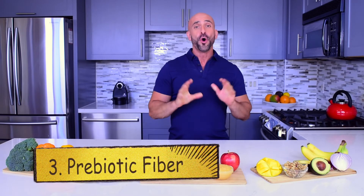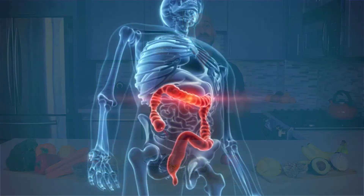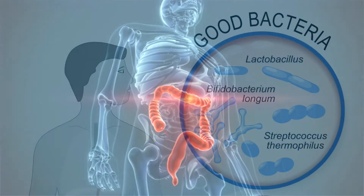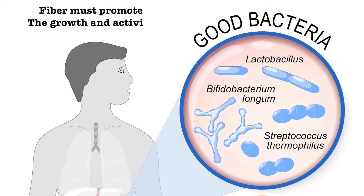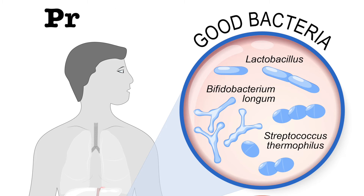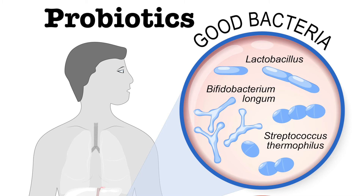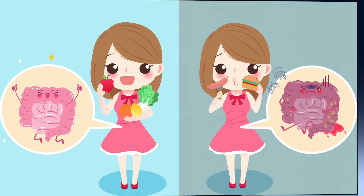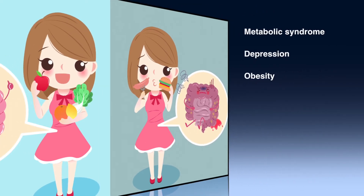The third type of fiber is prebiotic fiber. Although all prebiotics are fibers, not all fibers are prebiotic. In order to be a prebiotic fiber, it must be fermentable by your gut bacteria and promote the growth and activity of the good bacteria in your gut, also known as probiotics. This type of fiber feeds the probiotics to keep your gut healthy and prevent many chronic diseases such as metabolic syndrome, depression, and even obesity.